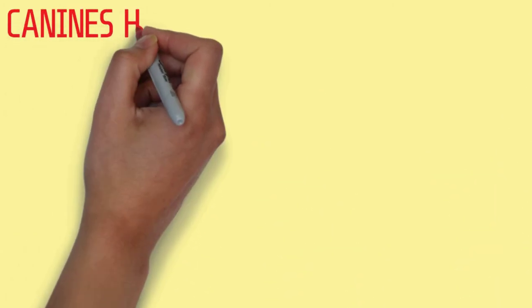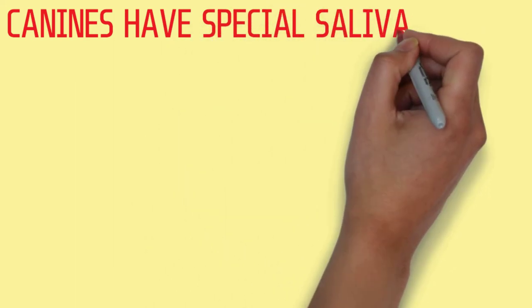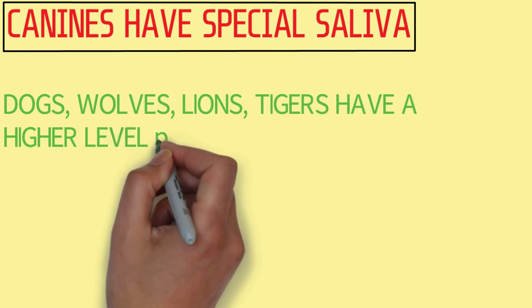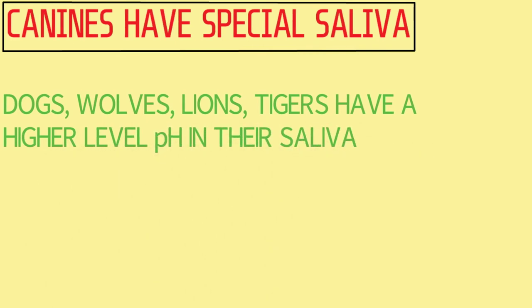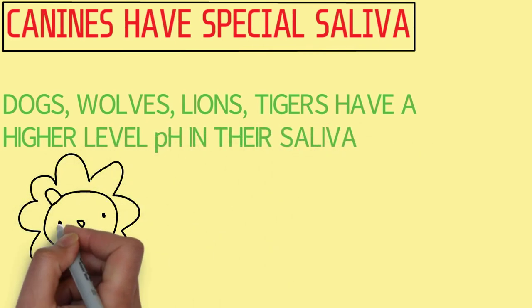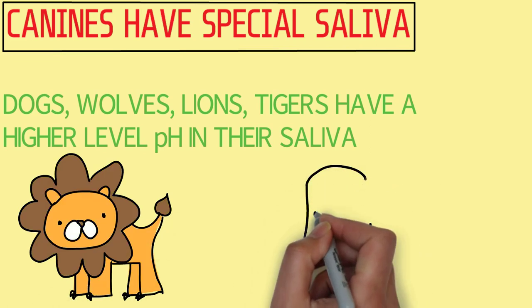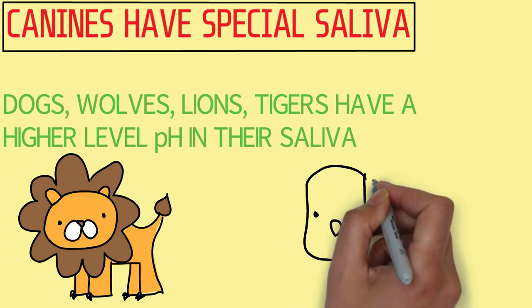Fact 4, canines have special saliva. Animals like dogs, wolves, lions, tigers and other large cats have a higher level of pH in their saliva. The saliva of dogs is around 8.5 pH and human is around 7.5 pH. This helps the animal to keep cavities away because of the alkalinity.